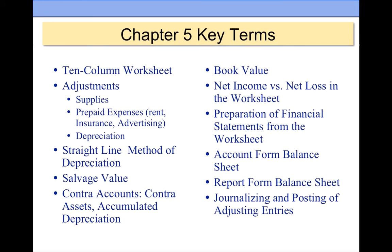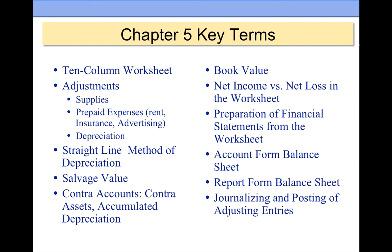This is Chapter 5. We talked about the 10-column worksheet and learned how to record three types of adjustments: for supplies, prepaid expenses (such as prepaid rent, insurance, or advertising), and depreciation. You learned the straight-line depreciation formula, salvage value, the contra-asset account called accumulated depreciation, and the definition of book value (cost minus accumulated depreciation). We completed the worksheet, prepared financial statements, compared account versus report form of the balance sheet, and journalized and posted adjusting entries to the journal and the ledger.